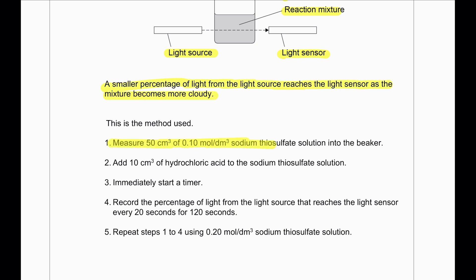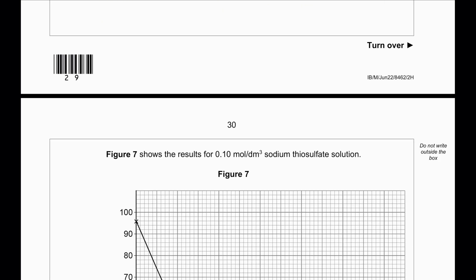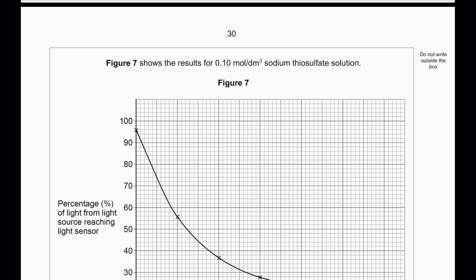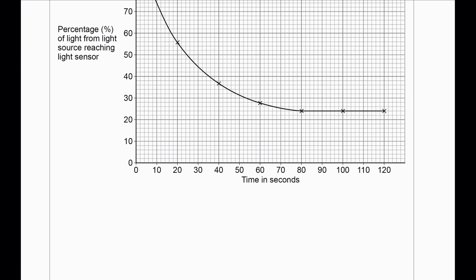The method: measure 50 cm³ of 0.1 mol/dm³ sodium thiosulfate solution into the beaker; add 10 cm³ of hydrochloric acid; immediately start the timer; record the percentage of light reaching the sensor every 20 seconds for 120 seconds. The student then repeats steps 1 to 4 using 0.2 mol/dm³ thiosulfate solution. Figure 7 shows the results for 0.1 mol/dm³ thiosulfate solution.